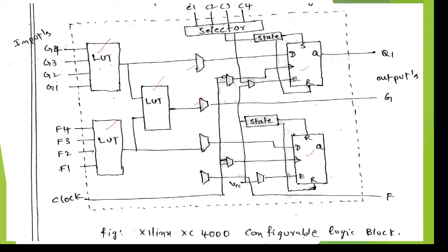But if you go for UltraFlex, not Vertex - if you go for UltraFlex Company, it is having only one look-up table. But here you can see in Xilinx series, there are three look-up tables.